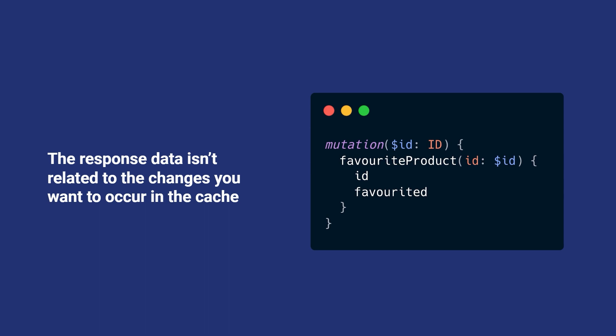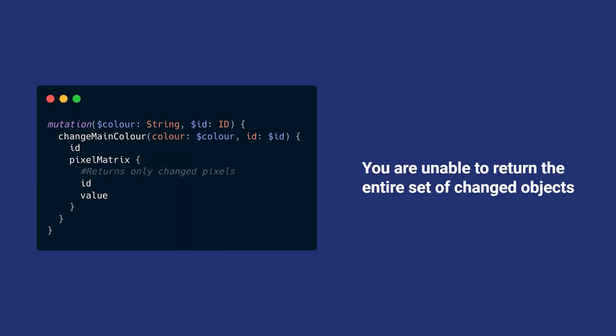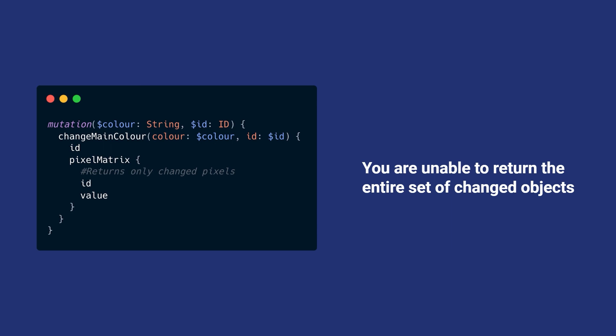When we're not happy is when it doesn't automatically update. For example, we have this product, we're going to favorite it. But the change we want to happen in the cache is not related to that response data. I favorited this product, I have a number of favorited products — maybe that should update. But of course it won't, you'd have to write an update function. Or if we didn't return all the objects after changing a list — we only returned the changed ones — the cache has no idea what to do. Were the objects you didn't return deleted? Should it merge? It makes no assumptions about what you want to do with your data, you have to be very explicit. In this scenario, you'd have to write an update function.